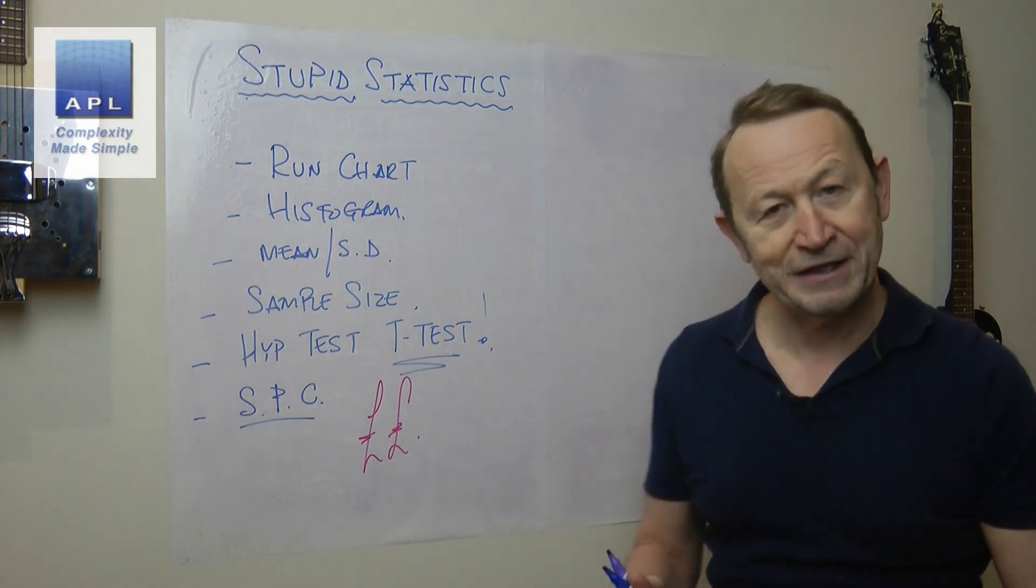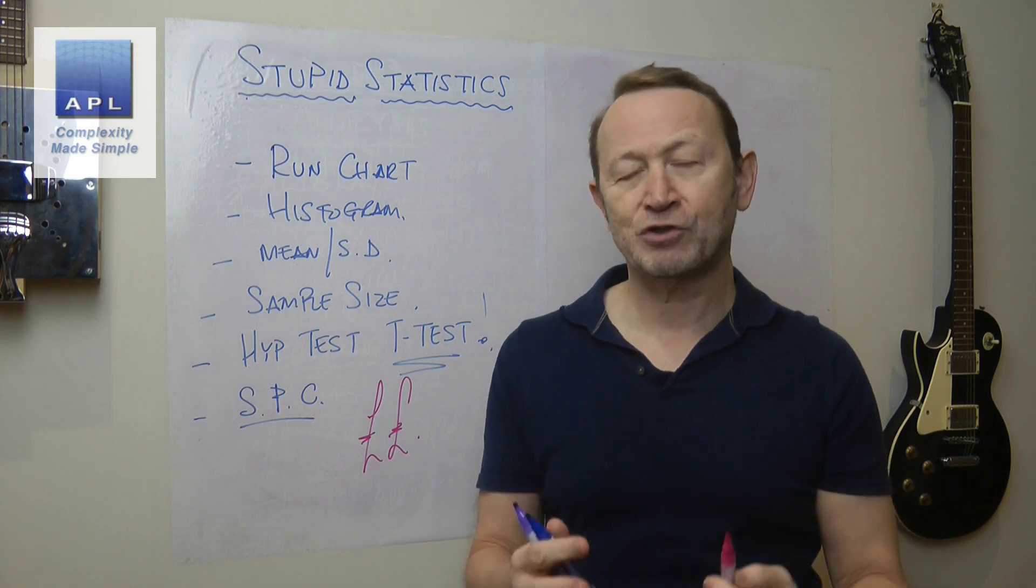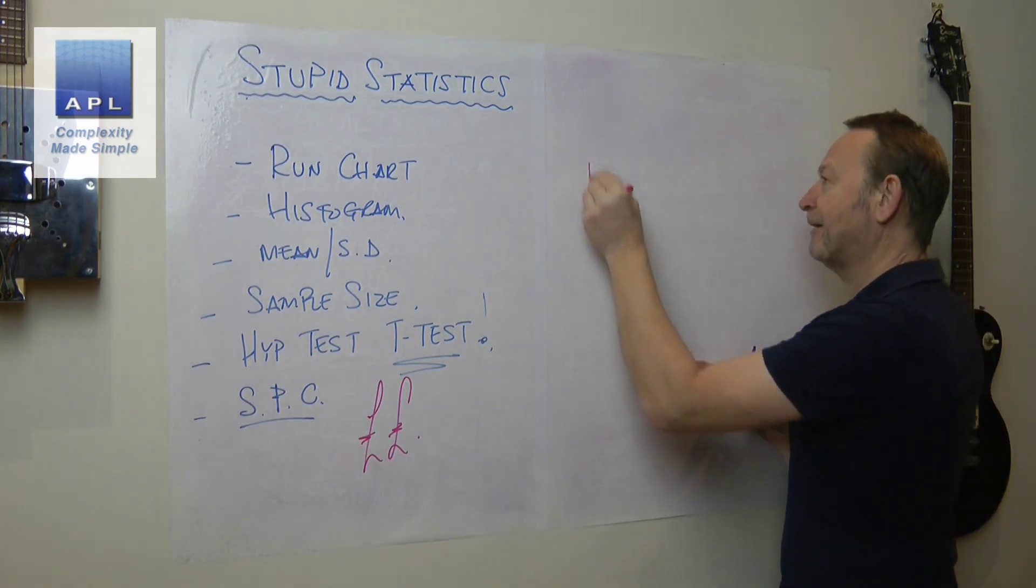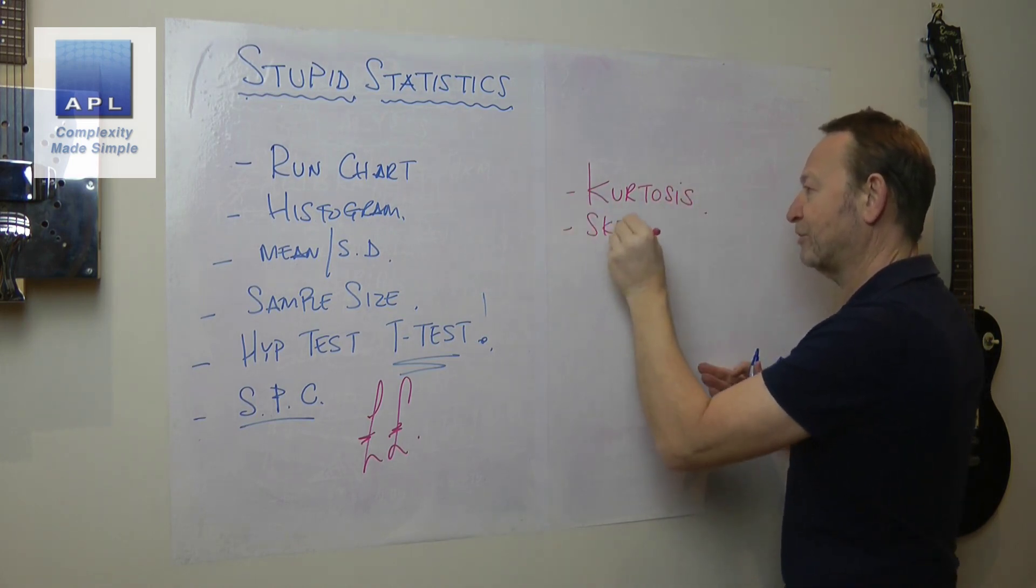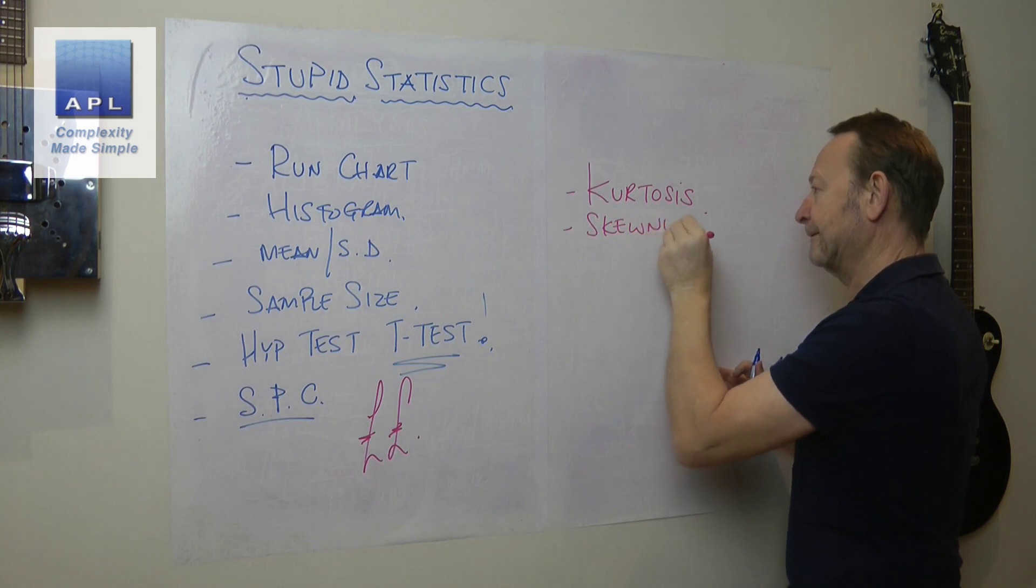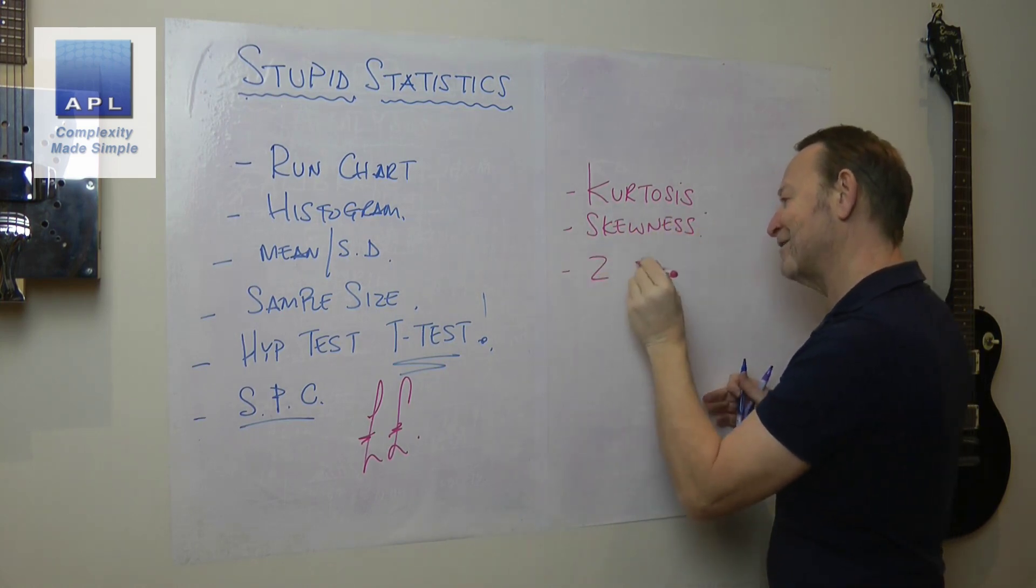Now look guys, these are the valuable statistics. These are the statistics that make money, these are the ones you should learn. When people start talking about, let's have a think, you know what is kurtosis, what is skewness, what else could we talk about? Oh yeah, zed scores.